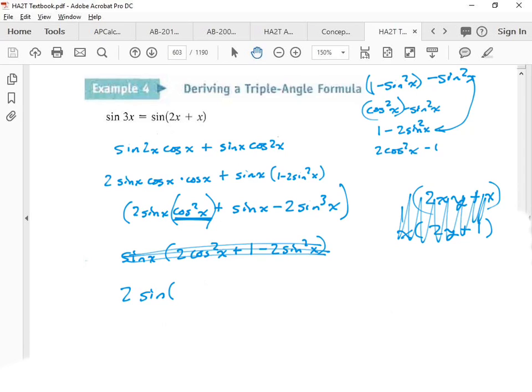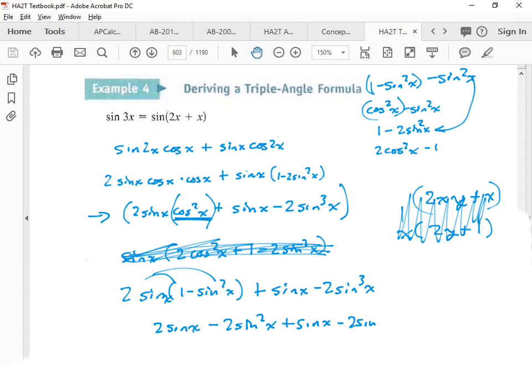Two sine times one minus sine squared x. Well, I went back, I went back to this guy right here. Okay, so now I'm back, I have sine x here minus two sine to the third x, and then I have to distribute this. Oh dang, two, oops, I forgot my x. Two sine x minus two sine squared x plus sine x minus two sine to the third x.